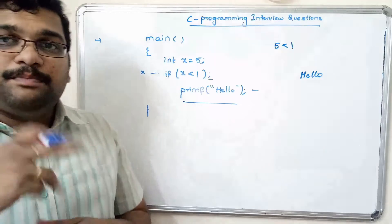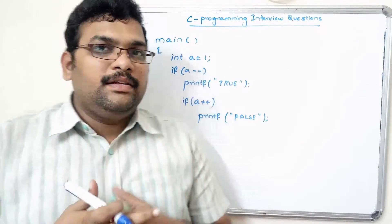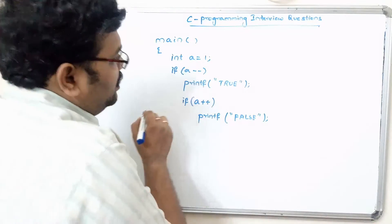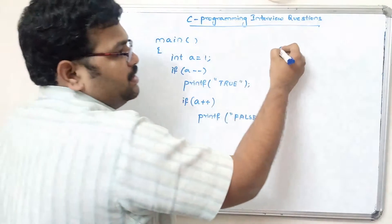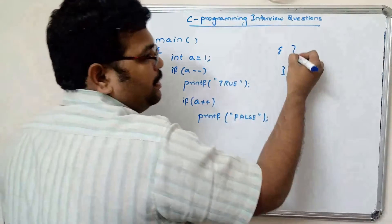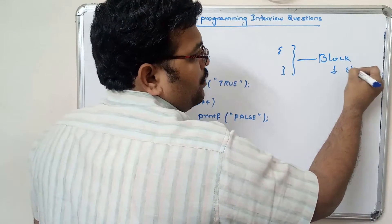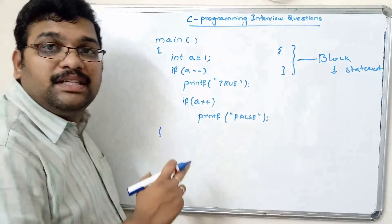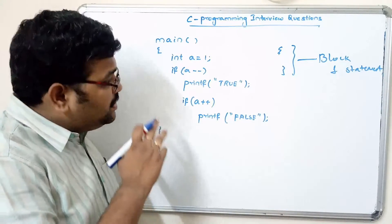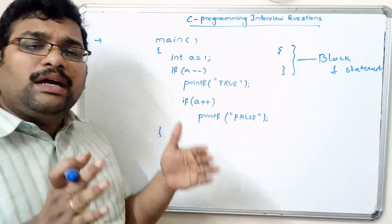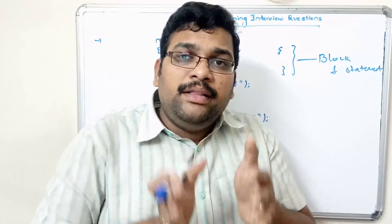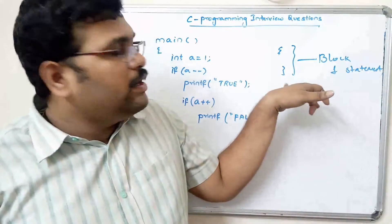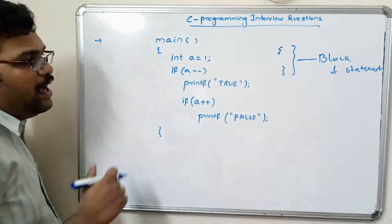Let's move to the second question. Here a equals 1 and we are using two increment and decrement operators in the conditional statements. There are no curly braces after the conditional statement. Curly braces represent a block of statements — if you want to combine more than one statement as a block, you can place curly braces anywhere in the program. If a block consists of only a single statement, you can omit the curly braces.